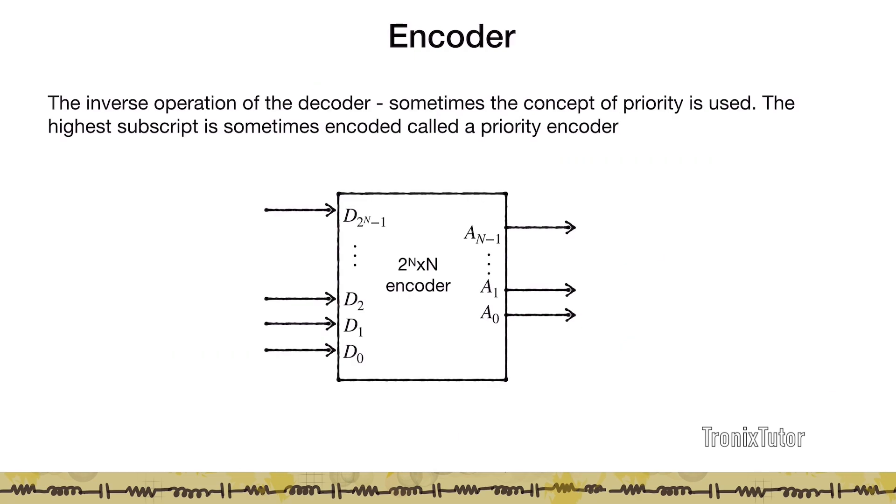The flip or the operation of the decoder is the encoder. This is basically taking 2 power n inputs and converting it to a word. Based on which of these lines goes high, it tells you the index of the line that has gone high. We sometimes use what is known as a priority encoder. A priority encoder can be designed such that only the highest subscript is sent out as the output of the encoder.